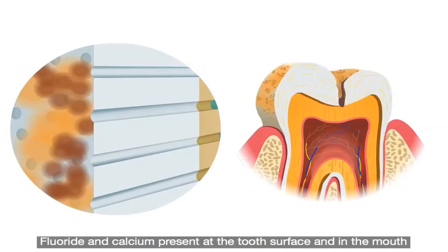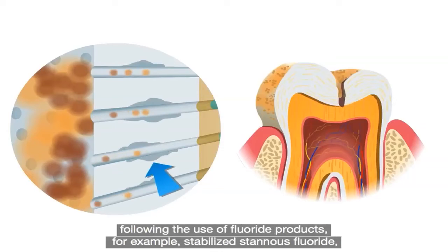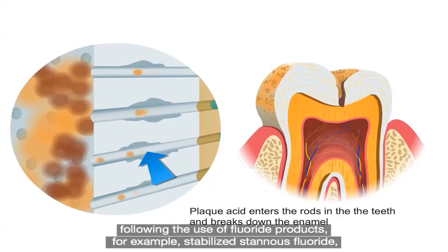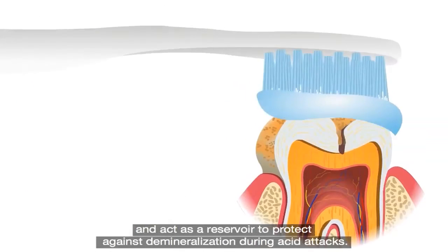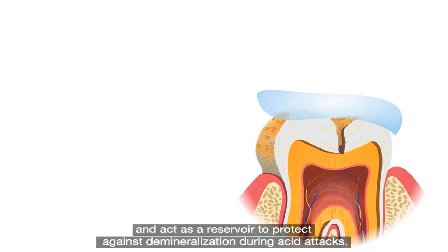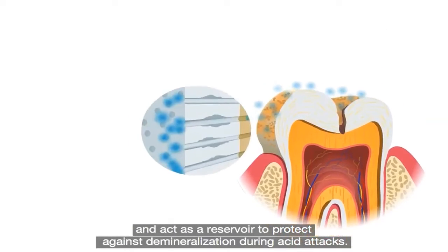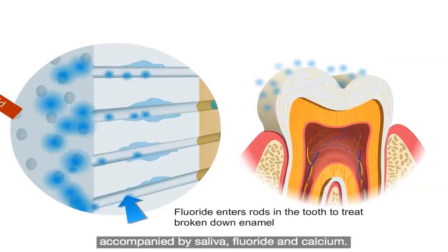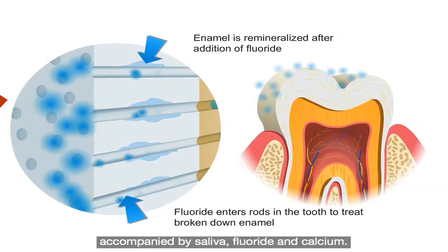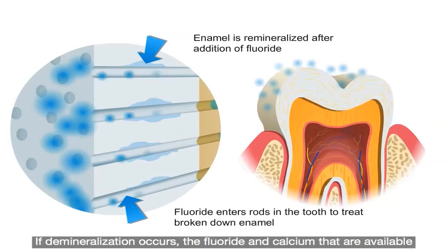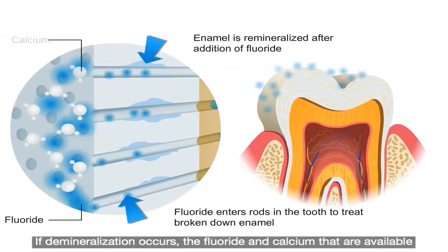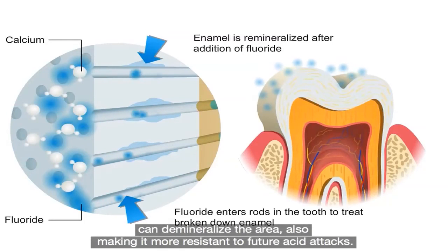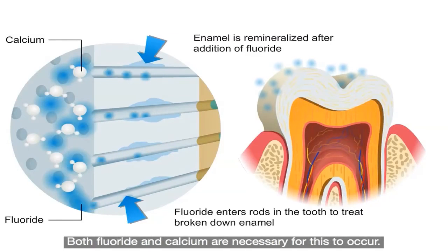Fluoride and calcium present at the tooth surface and in the mouth following the use of fluoride products — for example, stabilized stannous fluoride — act as a reservoir to protect against demineralization during acid attacks. When acid is produced by bacteria, it penetrates into the enamel accompanied by saliva, fluoride, and calcium. If demineralization occurs, the fluoride and calcium that are available can remineralize the area, also making it more resistant to future acid attacks. Both fluoride and calcium are necessary for this to occur.